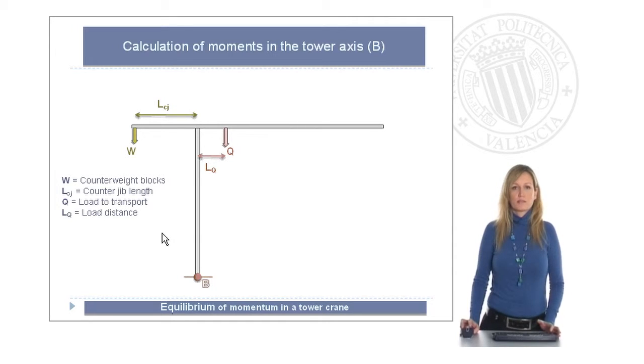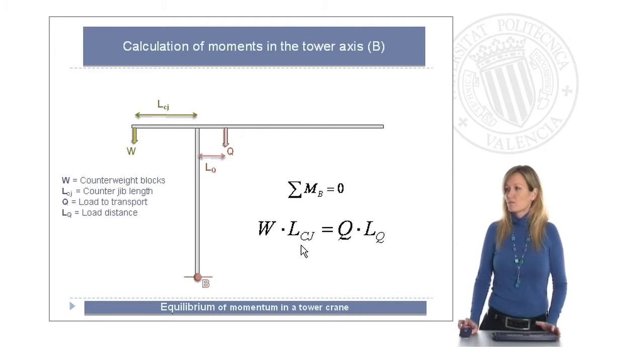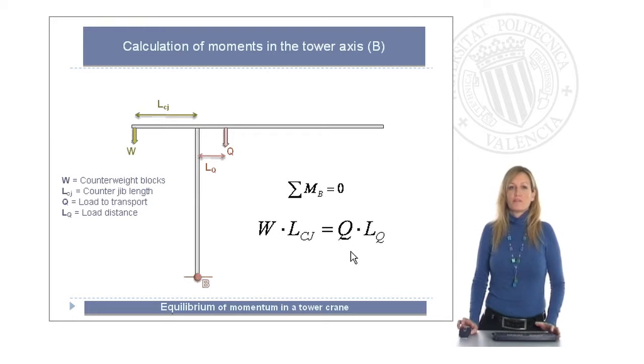Having all these forces and distances, if we write this equation of sum of moments in B equal to zero, we have to see, at this side, the moment we have is the counterweight blocks, multiplied by the counter jib length, and at the other side of the axis, we have the load we want to transport, multiplied by the distance from the axis.